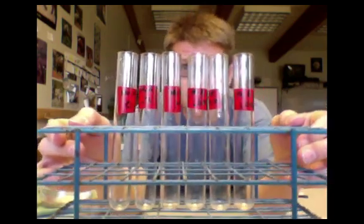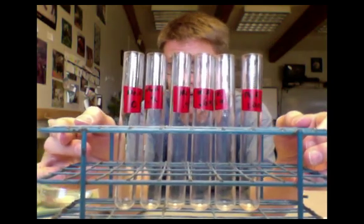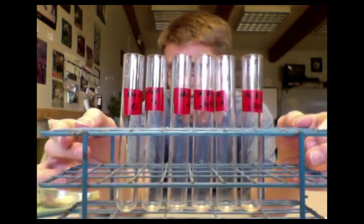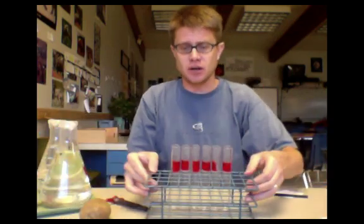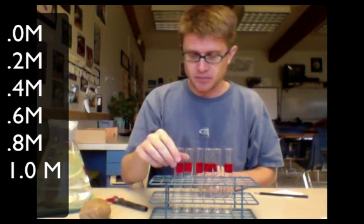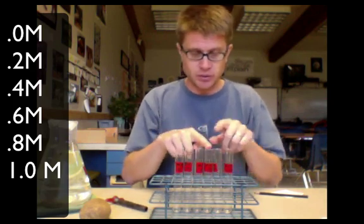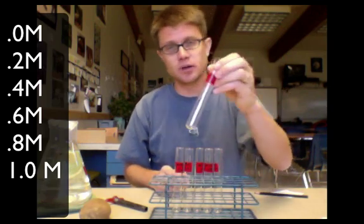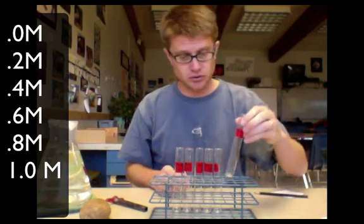These six different test tubes I've already labeled. They've got my name on it and the different concentrations of sucrose. We're going to start with zero molar sucrose, which is essentially distilled water. We're going to go 0.2, 0.4, 0.6, 0.8, and finally we're going to work our way up to 1.0 molar sucrose solution.